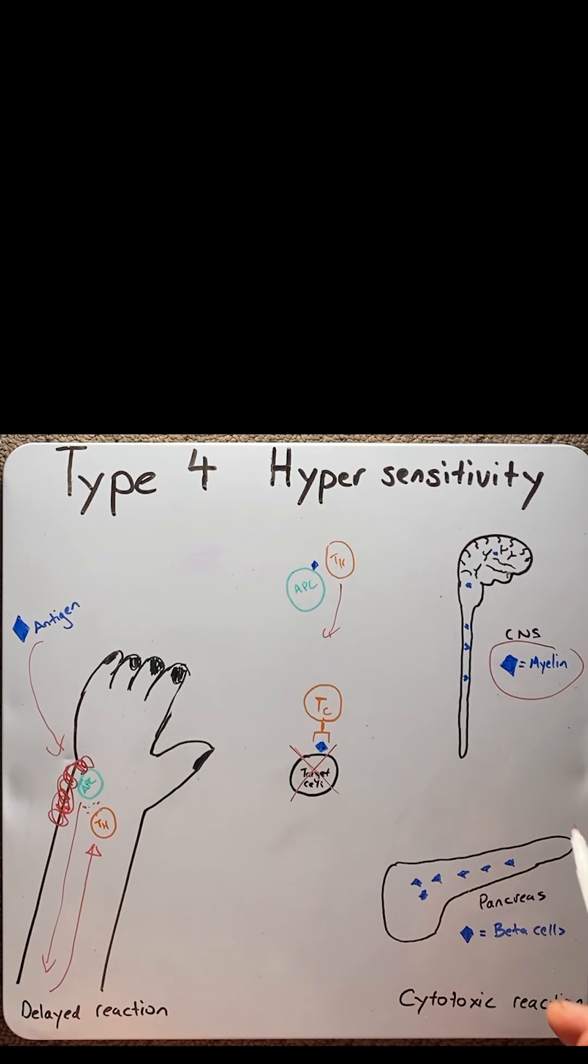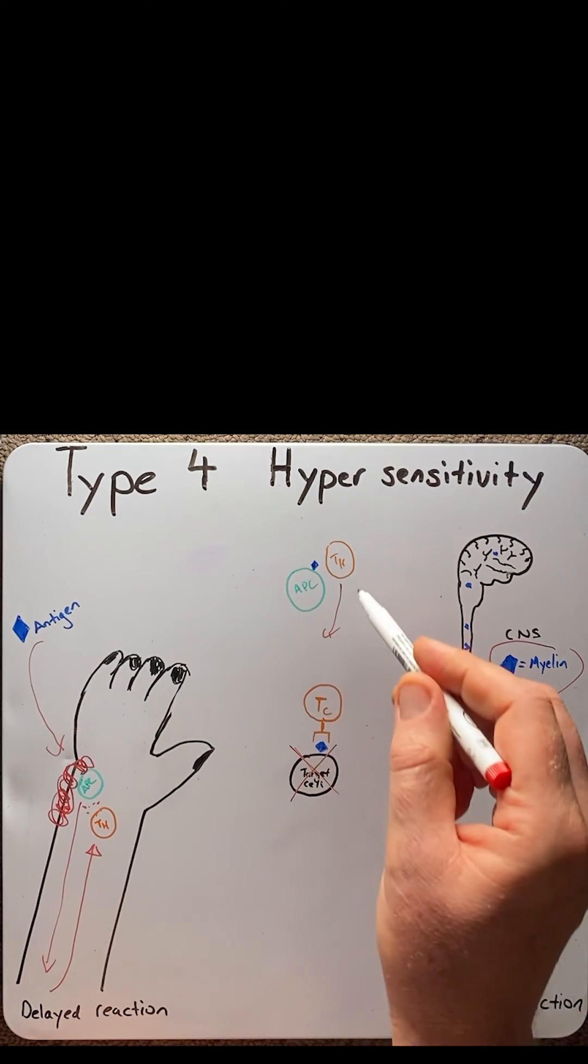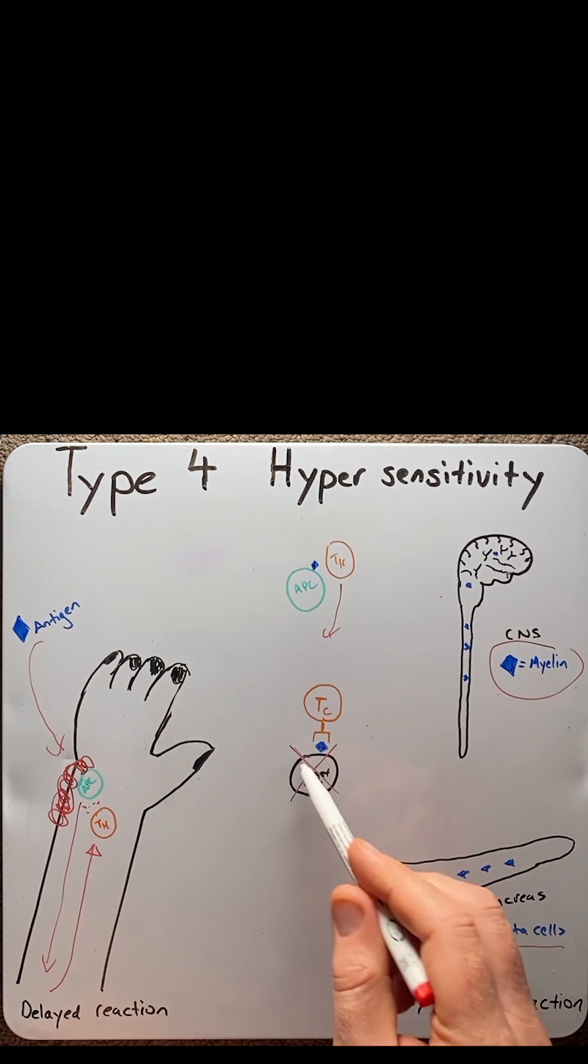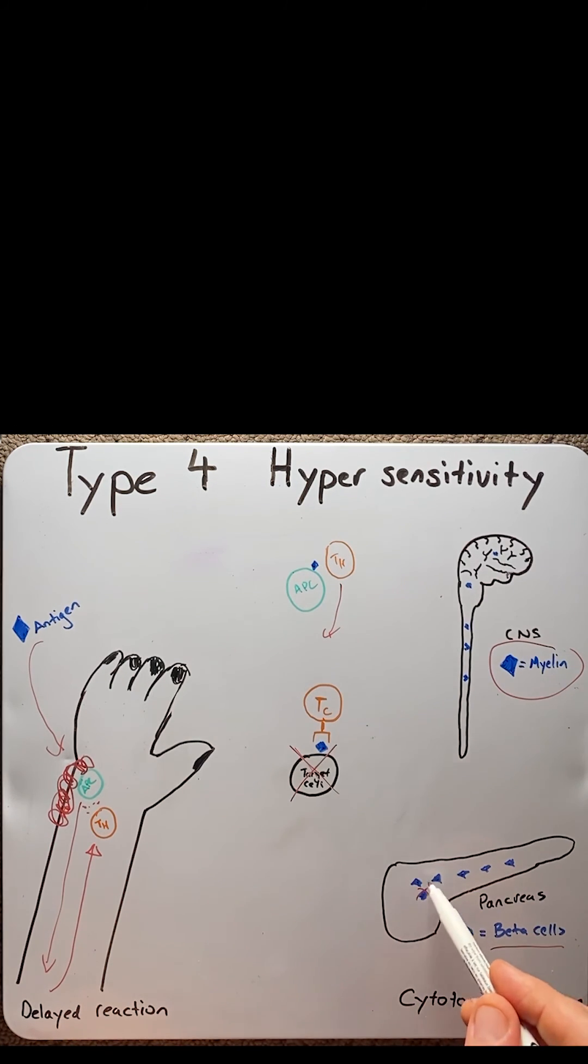In another example, the foreign antigen is seen to be on parts of beta cells. Beta cells are located in the pancreas that produce insulin. So, in the same process, beta cells are destroyed in the pancreas, leads to a disease known as type 1 diabetes.